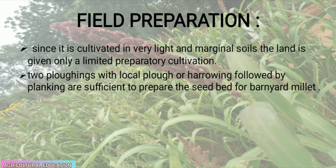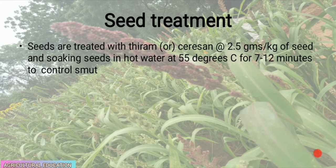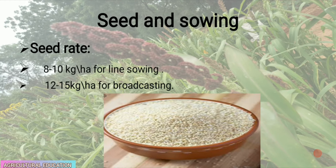Since barnyard millet is cultivated in very light and marginal soils, limited preparatory cultivation is needed. Two plowings with a local plow or harrowing followed by planking are sufficient to prepare the seedbed. Seeds are treated with thiram or ceresin at the rate of 2.5 grams per kg of seeds, and soaking seeds in hot water at 55°C for 7 to 12 minutes helps control smut.